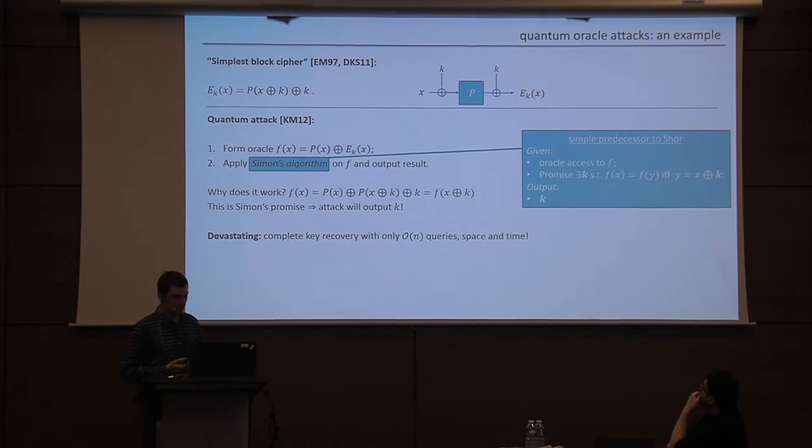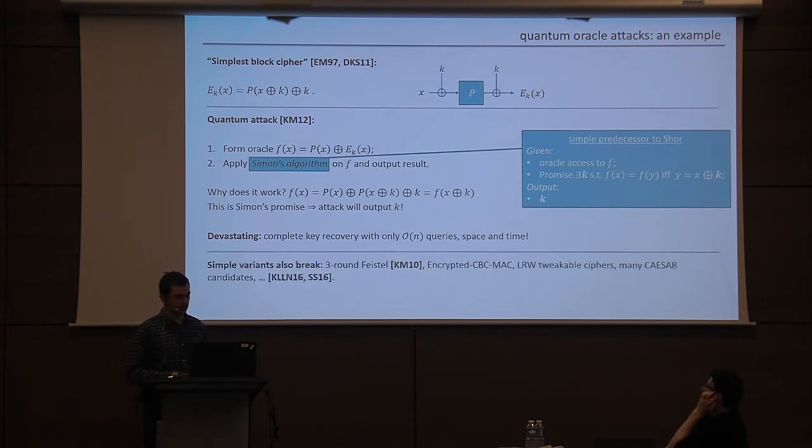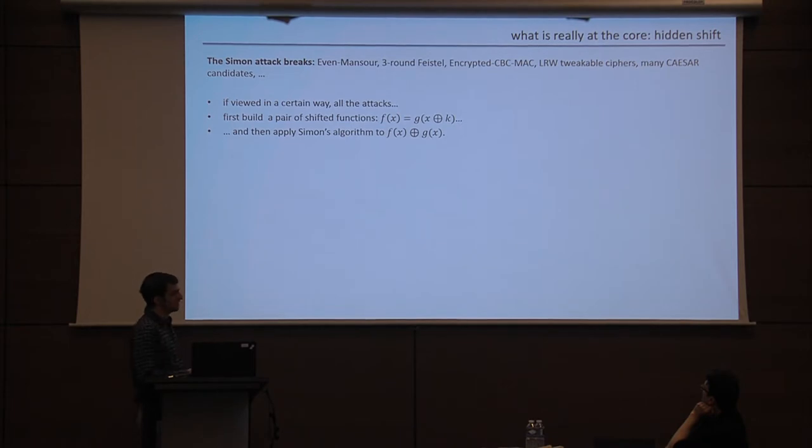So why does this work? Well, you can simply just check that the XOR of these two things has exactly this Simon's property, up to a little bit of error, which is no problem because we're doing this global Fourier computation that doesn't care about little disturbances. And in fact, we know that this attack will actually now output k. So this is a devastating attack, in this model at least. It gives completely key recovery with only a linear number of queries, space and time. So this was observed by Kuwakato and Mori. They also showed that Simon's algorithm can be used to distinguish the three-round Feistl cipher from random. And then last year there was a nice crypto paper and another paper which showed that Simon's algorithm can be used to break a whole host of other things, including encrypted CBC Mac, these tweakable ciphers, and lots of other stuff.